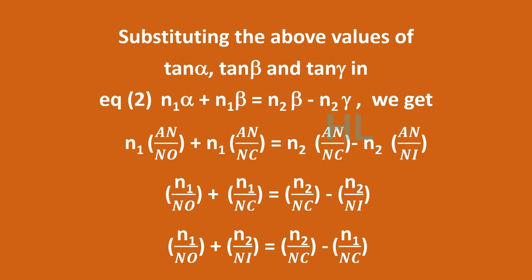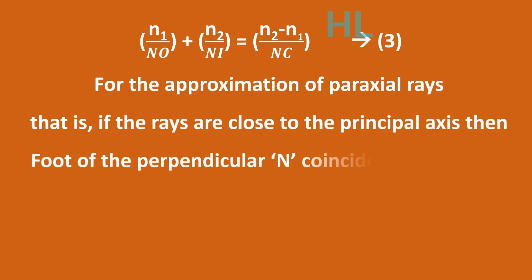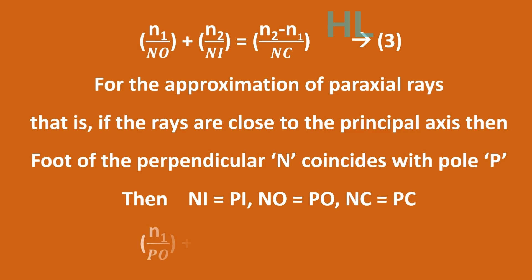On simplification, we get N1 by NO equals N2 by NI equals N2 minus N1 by NC. For the approximation of paraxial rays, that is if the rays are very close to the principal axis, then foot of the perpendicular N coincides with the pole P. Then NI is equal to PI, NO is equal to PO, and NC is equal to PC. Then we can write the equation number 3.